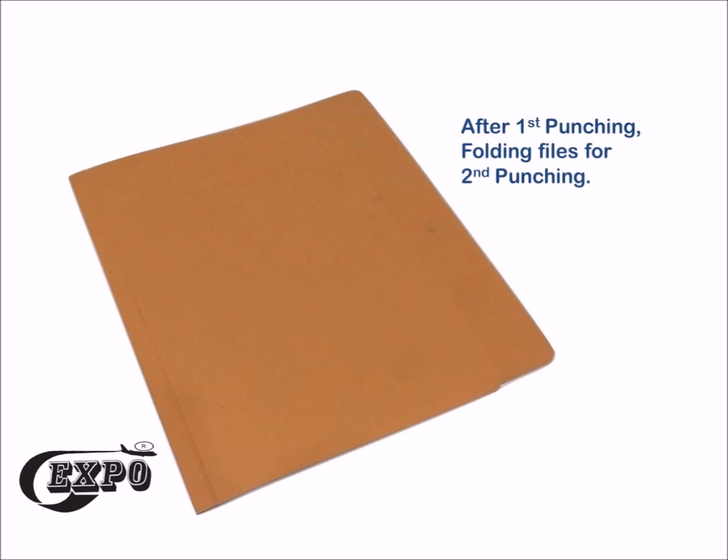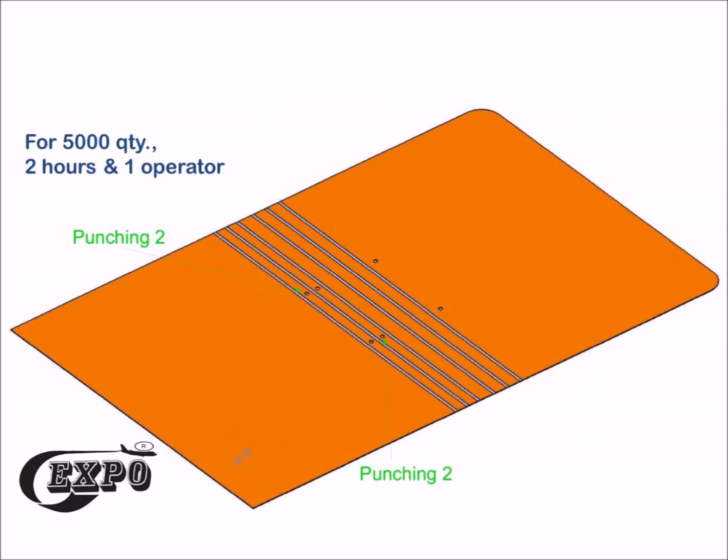For punching two operation, files are required to be folded as shown in the image. Again punching machine is required to perform the punching 2 operation on the files which approximately takes 2 hours and 1 operator.